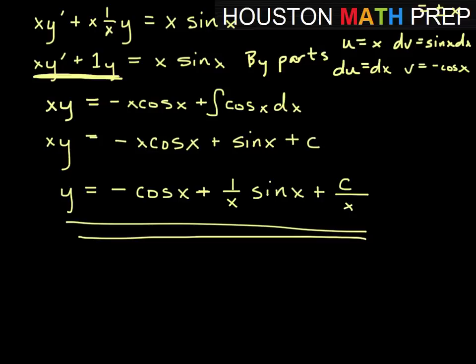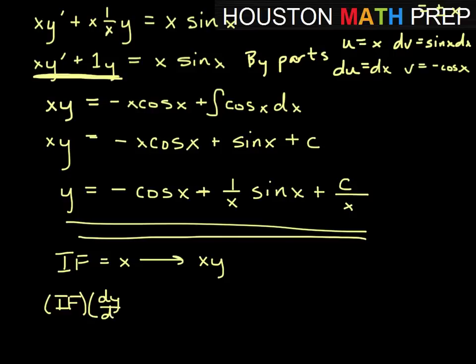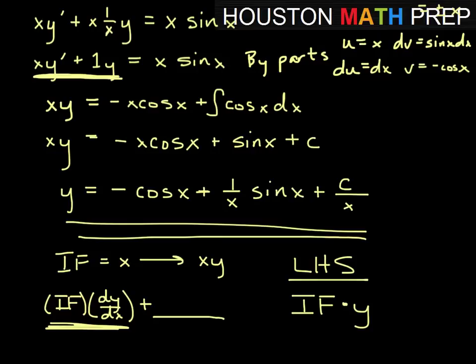A helpful shortcut: in this example the integrating factor was x, and the left-hand side product rule turned out to be the derivative of x times y. When you multiply through by the integrating factor, the left-hand side will always reduce to the derivative of (integrating factor times y). So if you're having trouble seeing what the left-hand side amounts to as a product rule, it's always going to be the derivative of your integrating factor times y.